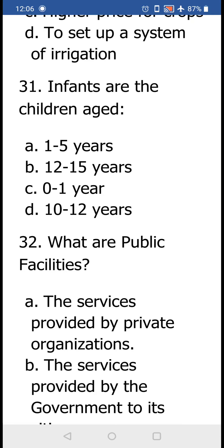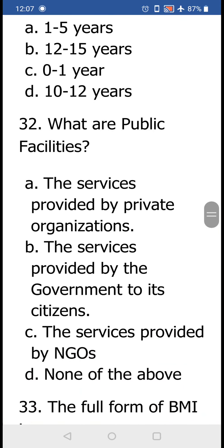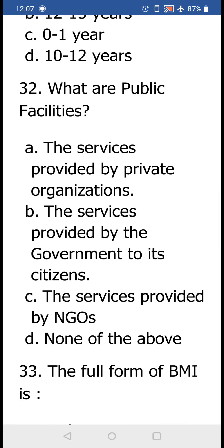Question number 31: Infants are the children aged (a) 1 to 5 years, (b) 12 to 15 years, (c) 0 to 1 year, or (d) 10 to 12 years. The answer is (c) 0 to 1 year — infants are all those children aged between 0 to 1 year.